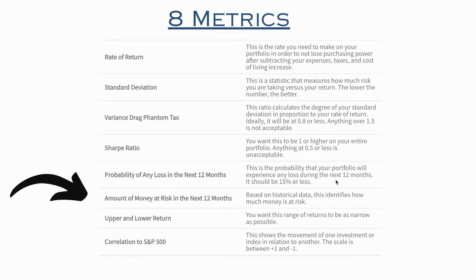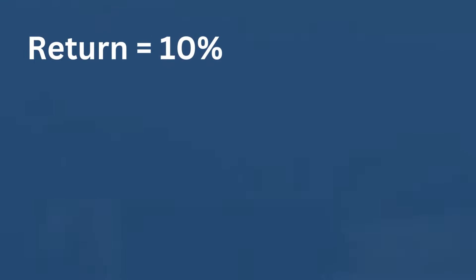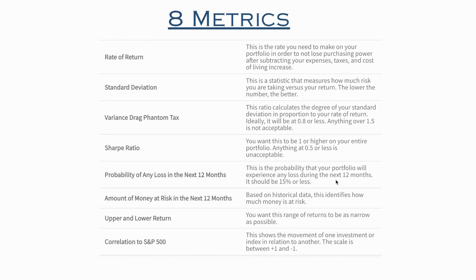Then you want to know what the amount of money at risk is — how much money based on historical data is at risk. Then your upper and lower return: you want this to be as narrow as possible. So if you had a historical rate of return of 10%, you would want to say you have just as good a chance of making 22% in the next 12 months as you do losing 2%. Sadly, most investment portfolios have historical rates of return of 10 with standard deviations of 15 or greater, meaning you have just as good a chance of making 40% as you do losing 20%.